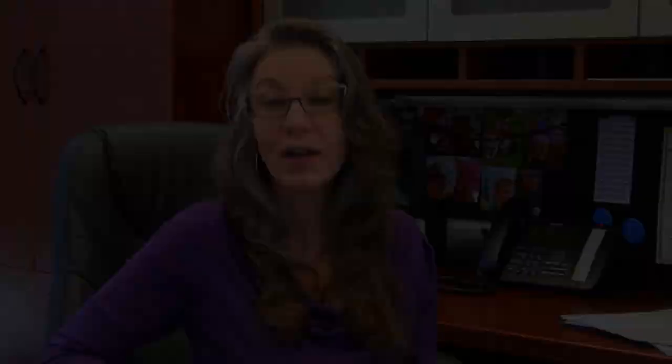So what do we mean by a blended course? In the case of Strata Fundamentals, it means that the course actually has three course components that you as a learner have to complete successfully before you will receive your 12 credits. You will not receive partial credit for only completing one component. The three components consist of an online course component, a bridging assignment, and a face-to-face classroom experience.